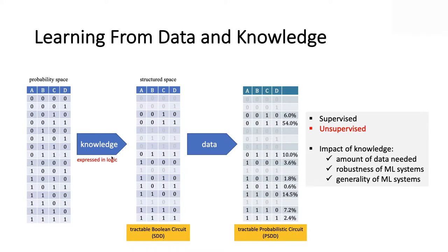Knowledge here means domain constraints expressed in logic. The effect is that your knowledge tells you that some states of the world are impossible because they conflict with your knowledge — logic effectively eliminates possibilities. So the idea is that we would like to learn a distribution over only the feasible states of the world as defined by your logical knowledge. If those feasible states, which we call the structured space, are represented by a tractable Boolean circuit — in particular an SDD — then learning a distribution over the structured space becomes facilitated.